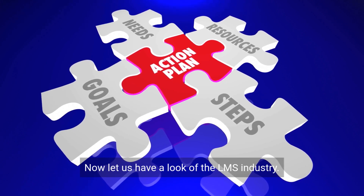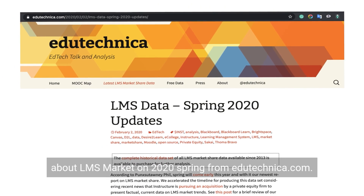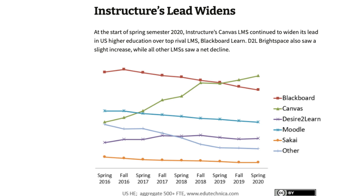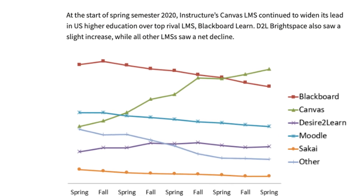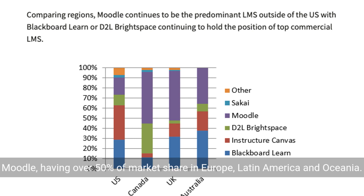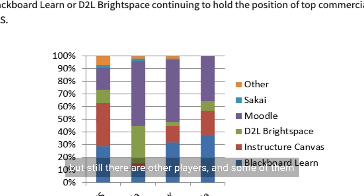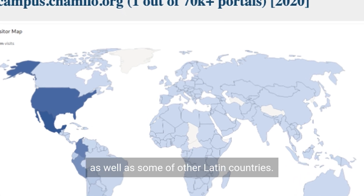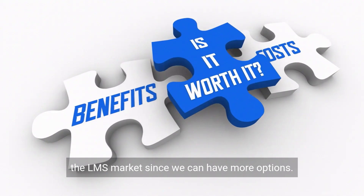Let us have a look at the LMS industry. This is a report about the LMS market in spring 2020 from edutechnica.com. We see Canvas slightly surpassed Blackboard as number 1 in the US market, with Moodle still at number 3, followed by D2L and Sakai. Worldwide the picture is different — Moodle holds over 50% market share in Europe, Latin America, and Oceania. There are other players focused on different market needs or geographic areas, such as Chamilo, which has a strong market in Mexico and other Latin countries, giving users more options.